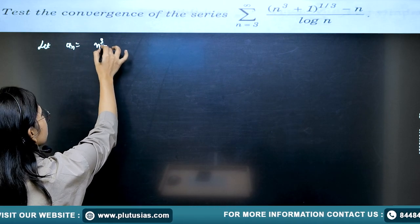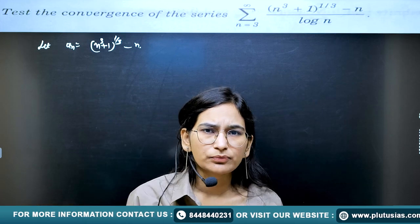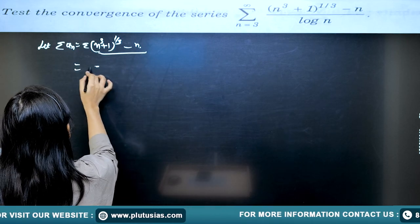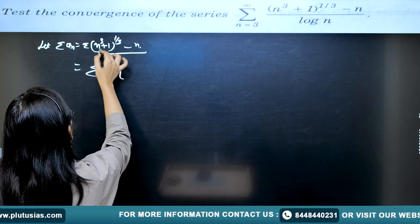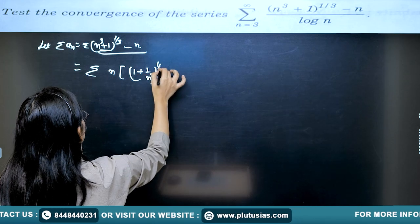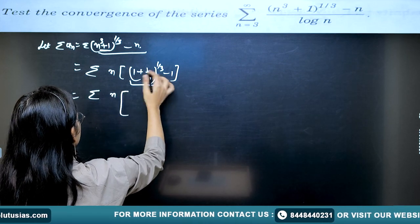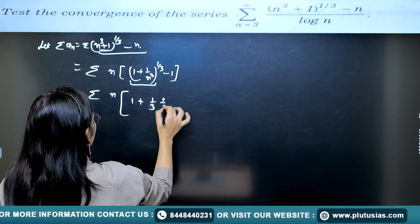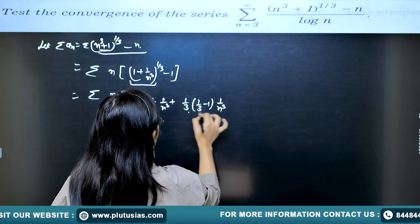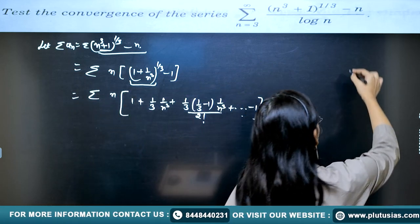Let aₙ = (n³ + 1)^(1/3) − n. We cannot show convergence directly, so we rearrange. Take the maximum power of n outside: factor out n, giving n · [(1 + 1/n³)^(1/3) − 1]. Now expand by binomial expansion. Using (1 + x)^r = 1 + rx + r(r−1)x²/2! + …, with x = 1/n³ and r = 1/3, we expand the bracket.